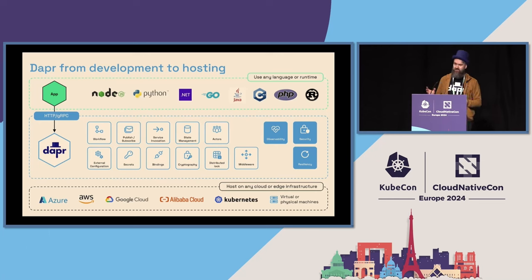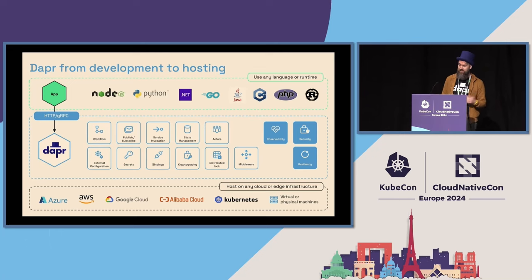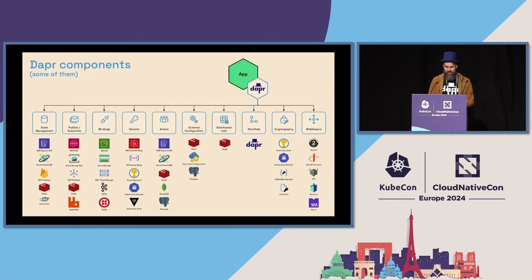Dapr has built-in observability, security, and resiliency capabilities. The nice thing is you can run it everywhere — on Kubernetes, on VMs, and on your local machine as well.